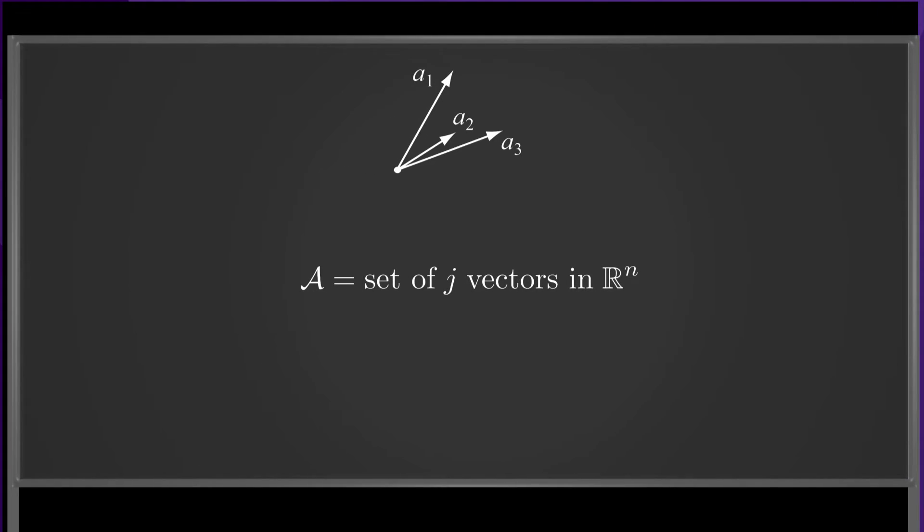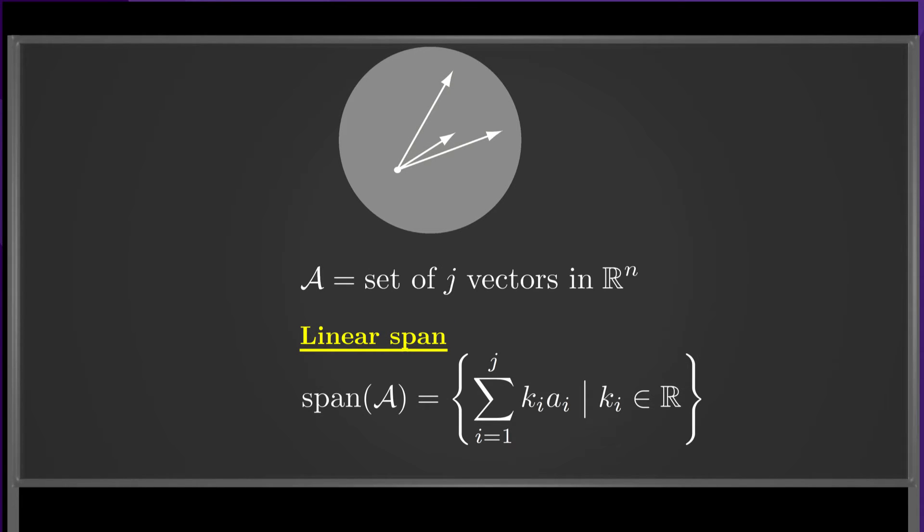Throughout this chapter, I'll be talking about linear combinations of vectors, so let's define the linear span, positive span, and convex span of a set of vectors. Let's define A as a set of vectors a1 through aj in an n-dimensional space, drawn as arrows emanating from an origin. In the drawing here, the vectors live in a two-dimensional space.